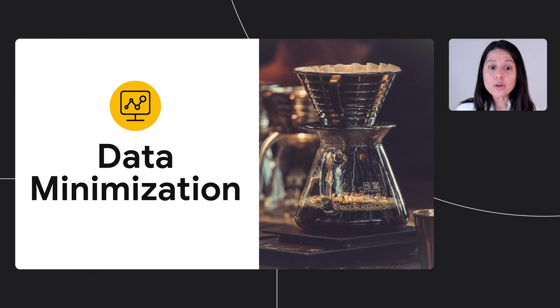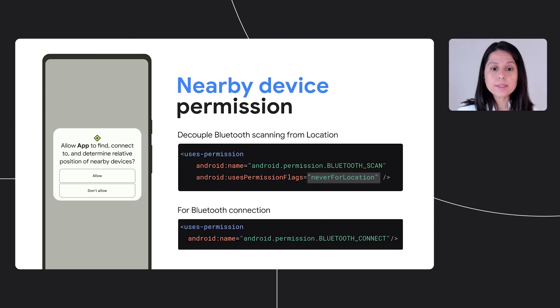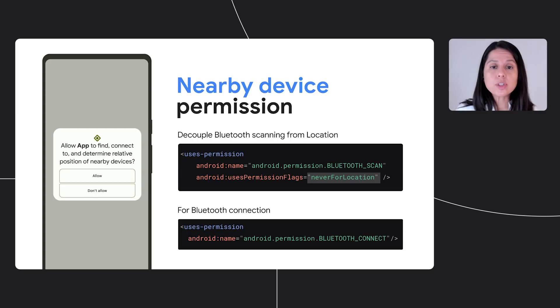Thanks, Eric. There's no better way to build trust with users than to minimize the data you require for your feature to work. One way we're minimizing data access in Android 12 is by adding a new runtime permission for nearby connections. Up until now, companion apps, such as watches and headphones, required the location permission to scan for nearby Bluetooth. We heard from users and developers that this was confusing, and not to mention over-granting location when the app just wanted Bluetooth. Going forward, companion apps can connect to their associated devices by requesting the new nearby permission.